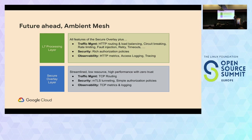Now, what does the future hold for us? Google and Istio have announced something called Ambient Mesh. Ambient Mesh is trying to split service mesh functionalities into two layers: if you only want MTLS, you can get it via a very simple overlay — a very lightweight proxy. Then if you want to optionally enable L7 processing features like traffic management and security, that's an additional feature you turn on. This tries to solve the problem of Istio being all-or-nothing.